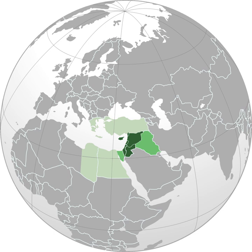The Levant is an approximate historical geographical term referring to a large area in the eastern Mediterranean. In its narrowest sense, it is equivalent to the historical region of Syria. In its widest historical sense, the Levant included all of the eastern Mediterranean with its islands, that is, it included all of the countries along the eastern Mediterranean shores.